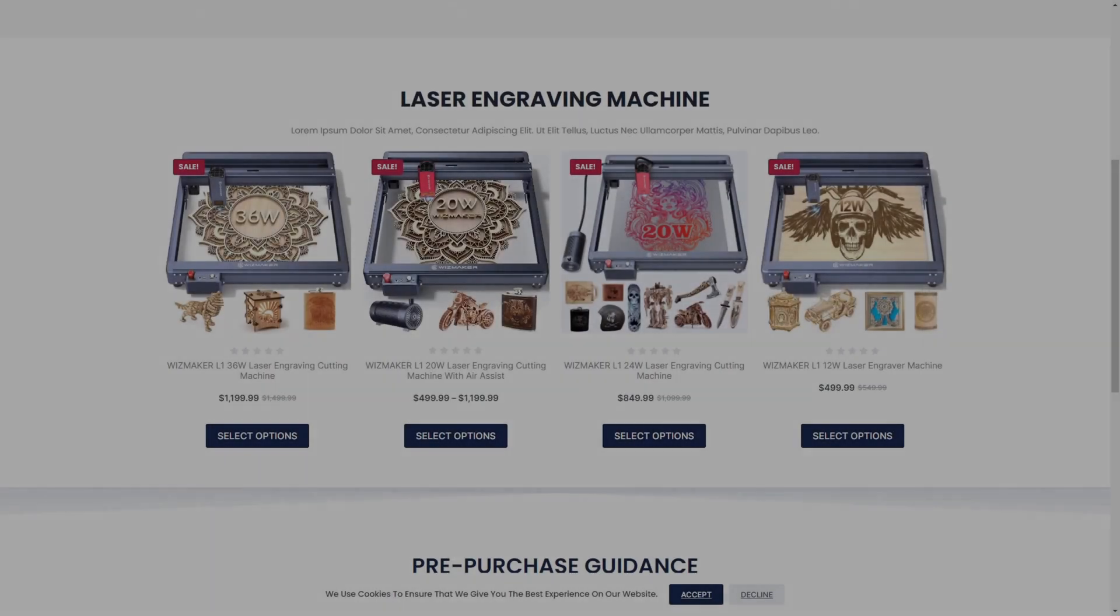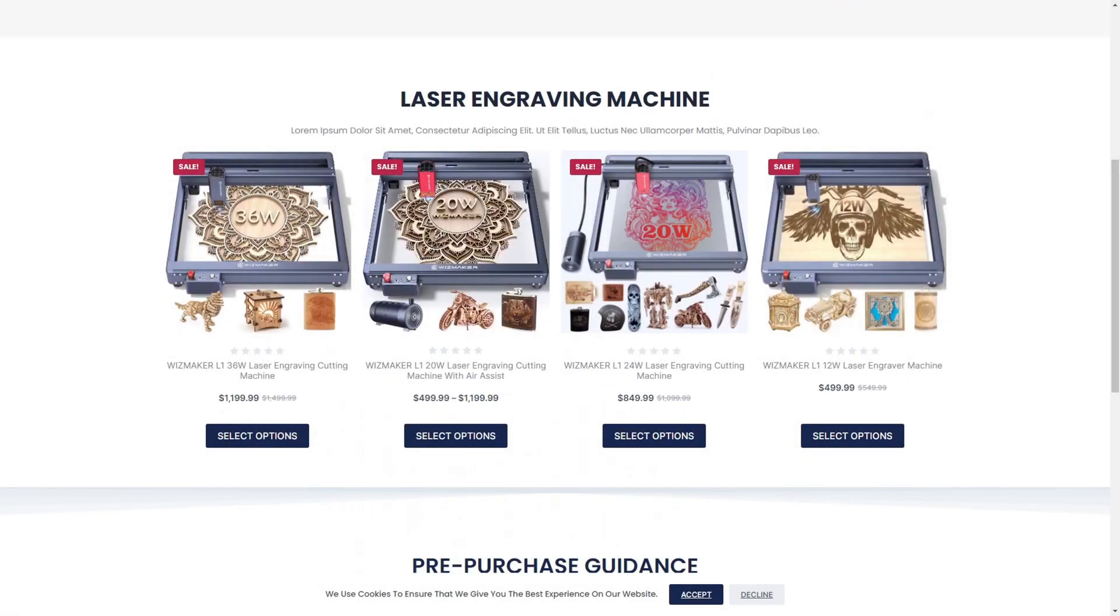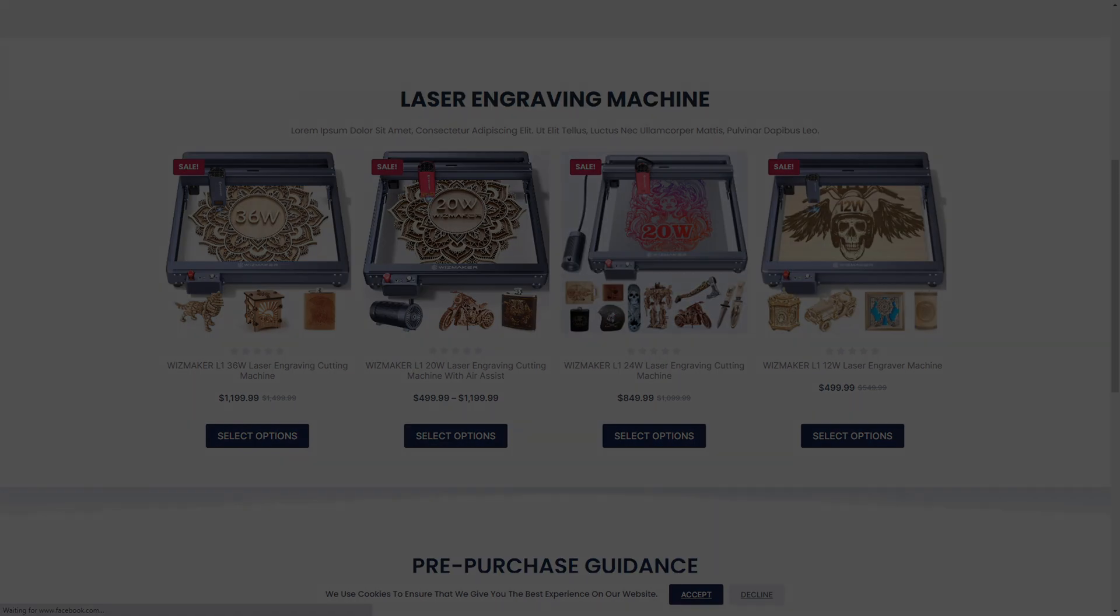The WizMaker L1 12 watt version sells for $499 US dollars, with the 24 watt costing $849 and the 36 watt costing $1,199 US dollars. That is very comparable to other lasers in these categories. From my experience with the 36 watt version, if you are looking for one of the most powerful diode lasers on the market, then the WizMaker 36 watt could be just what you are looking for.